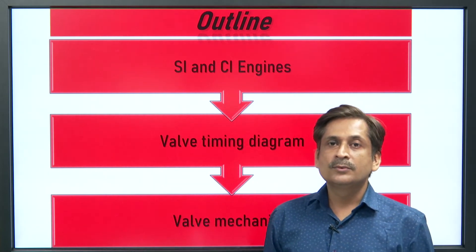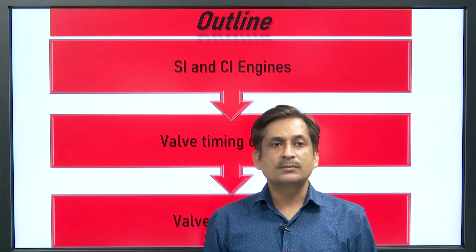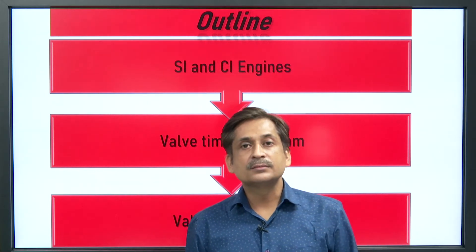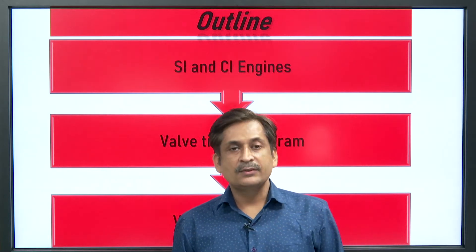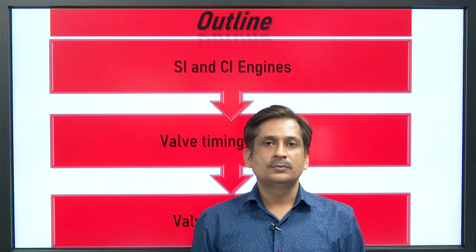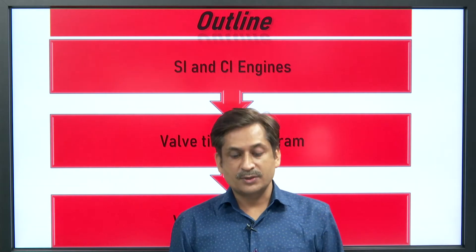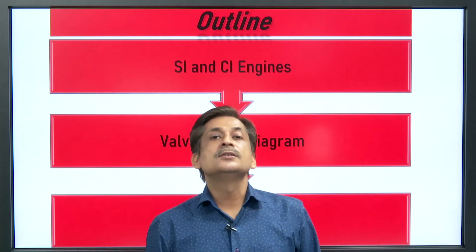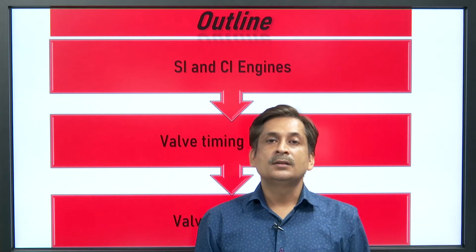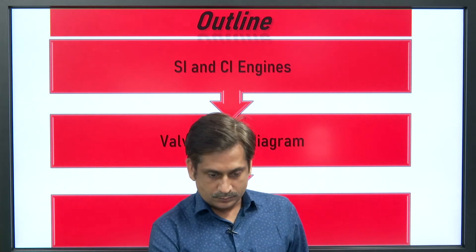This is the outline of today's lecture. I will talk about what is an SI Engine, what is a CI Engine, how they are different, and their comparison. Then, for their operation we need some valve mechanism, and I will discuss different valve mechanisms. With the help of valve mechanisms, we are able to have the valve timing diagram.